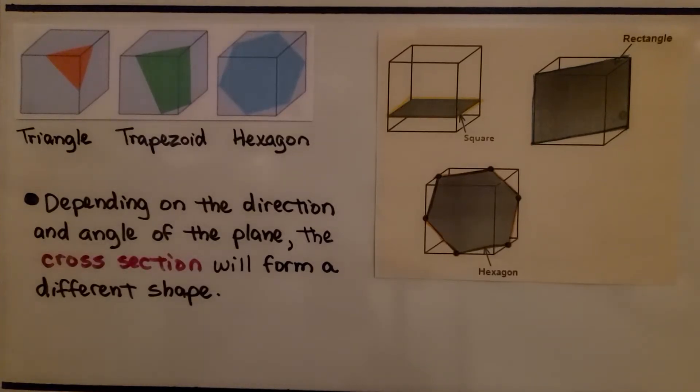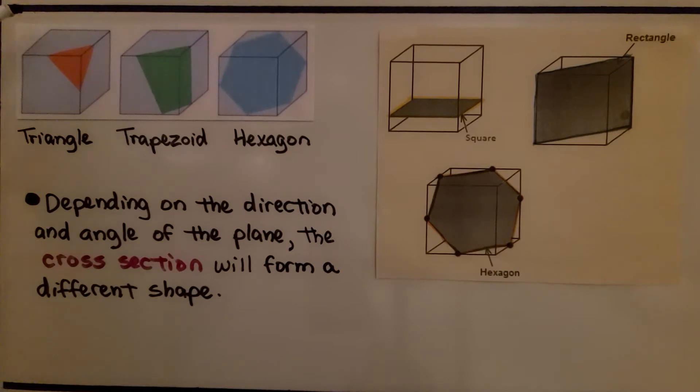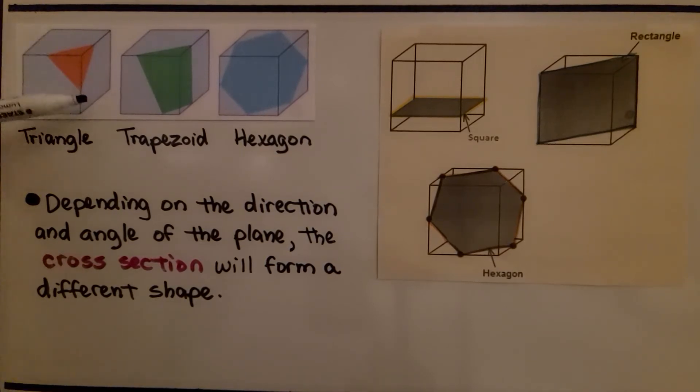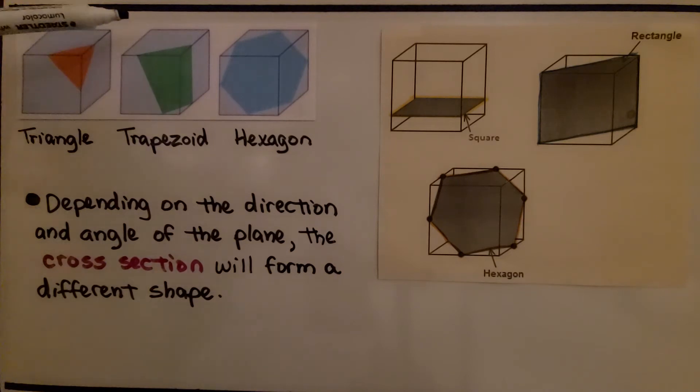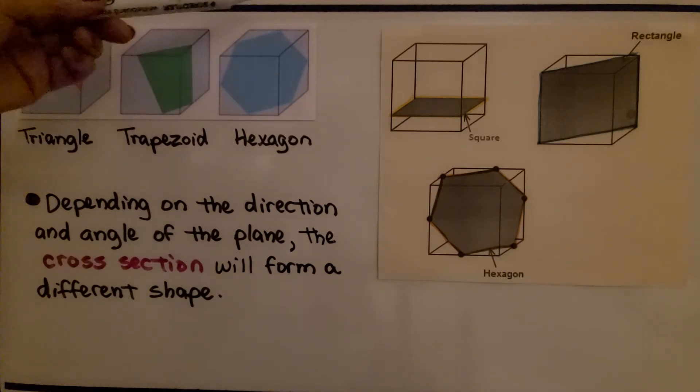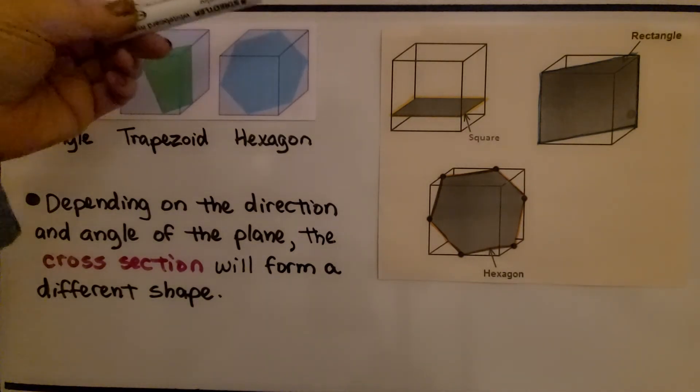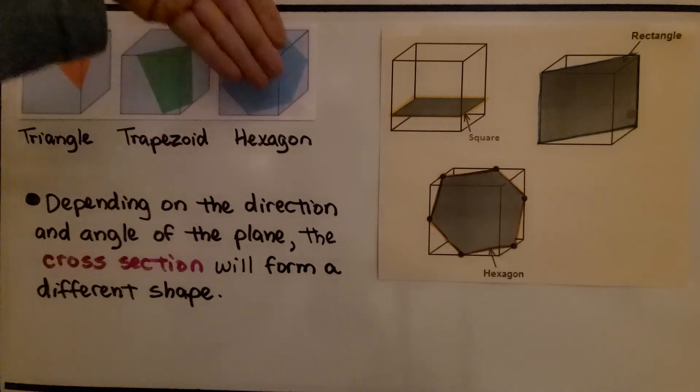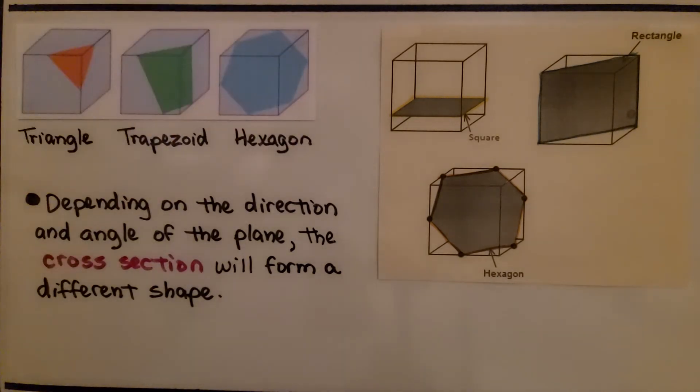Let's take a look at these cubes. This cube had a cross section cut in the shape of a triangle by cutting off the corner. And this one went deeper into the corner and it made a trapezoid cross section. This one went on a slant this way and it cut it on a slant and made a hexagon.